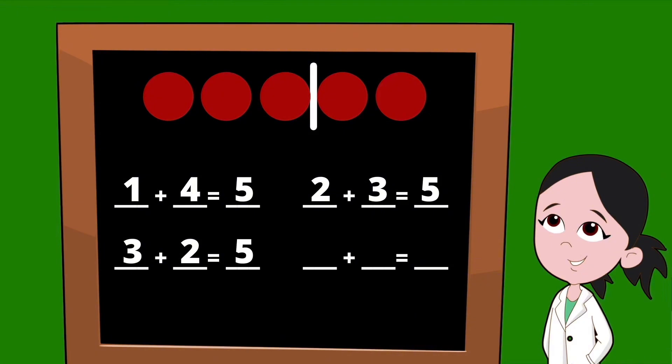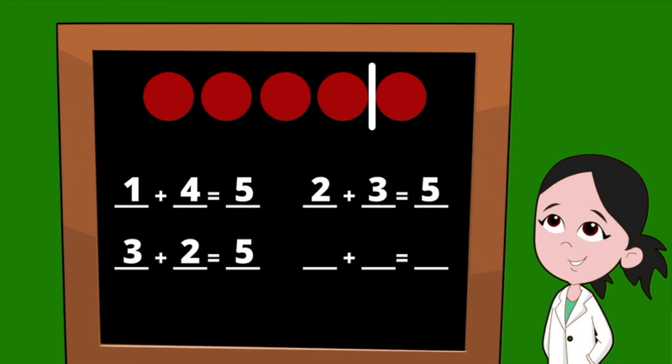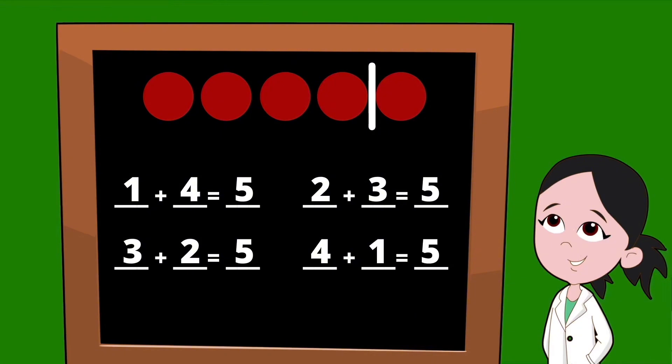To get our last set of partners for the number five, let's slide our line over one more dot. On the left of our line, we have how many dots? That's right, we have four dots. On the right of our line, we have one dot. Our last set of partners, four plus one equals five.